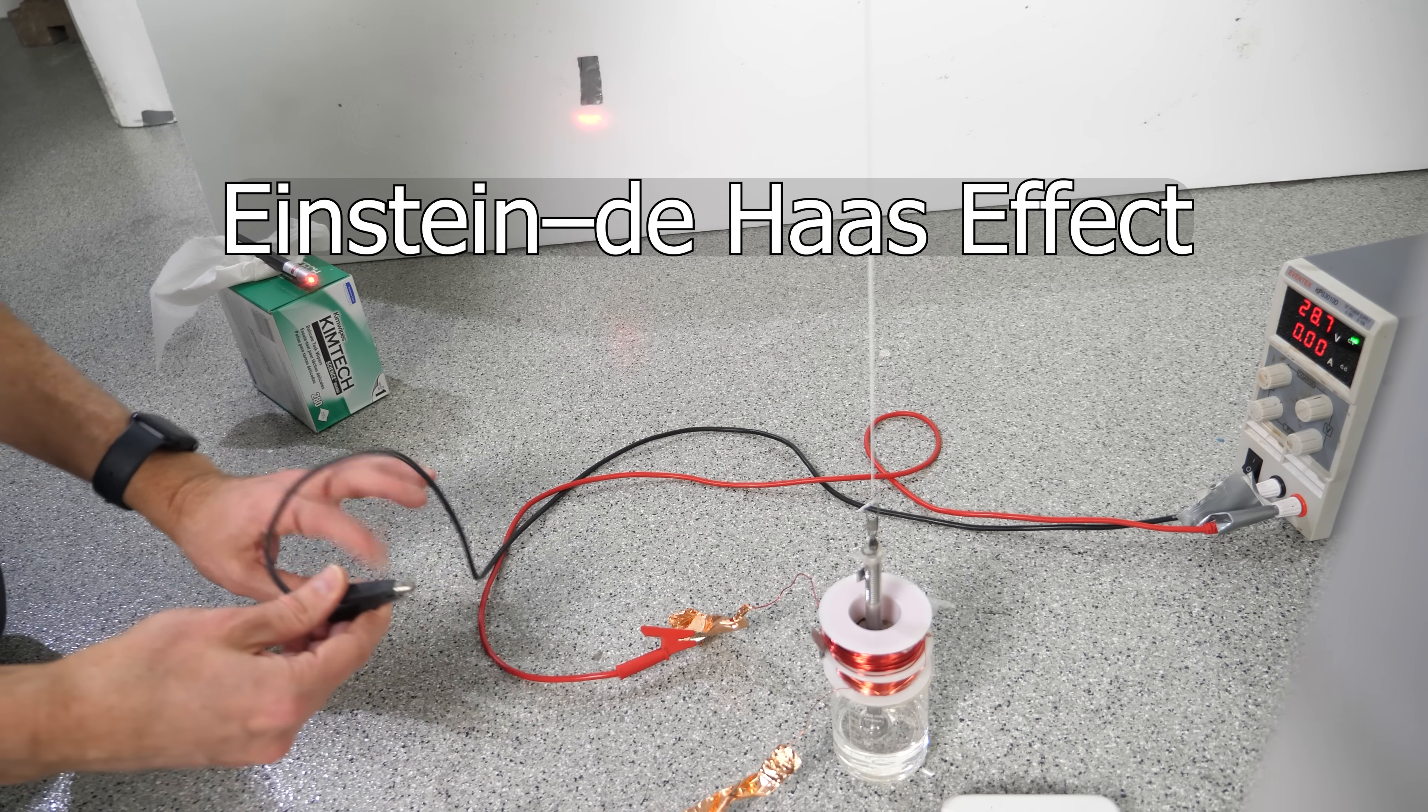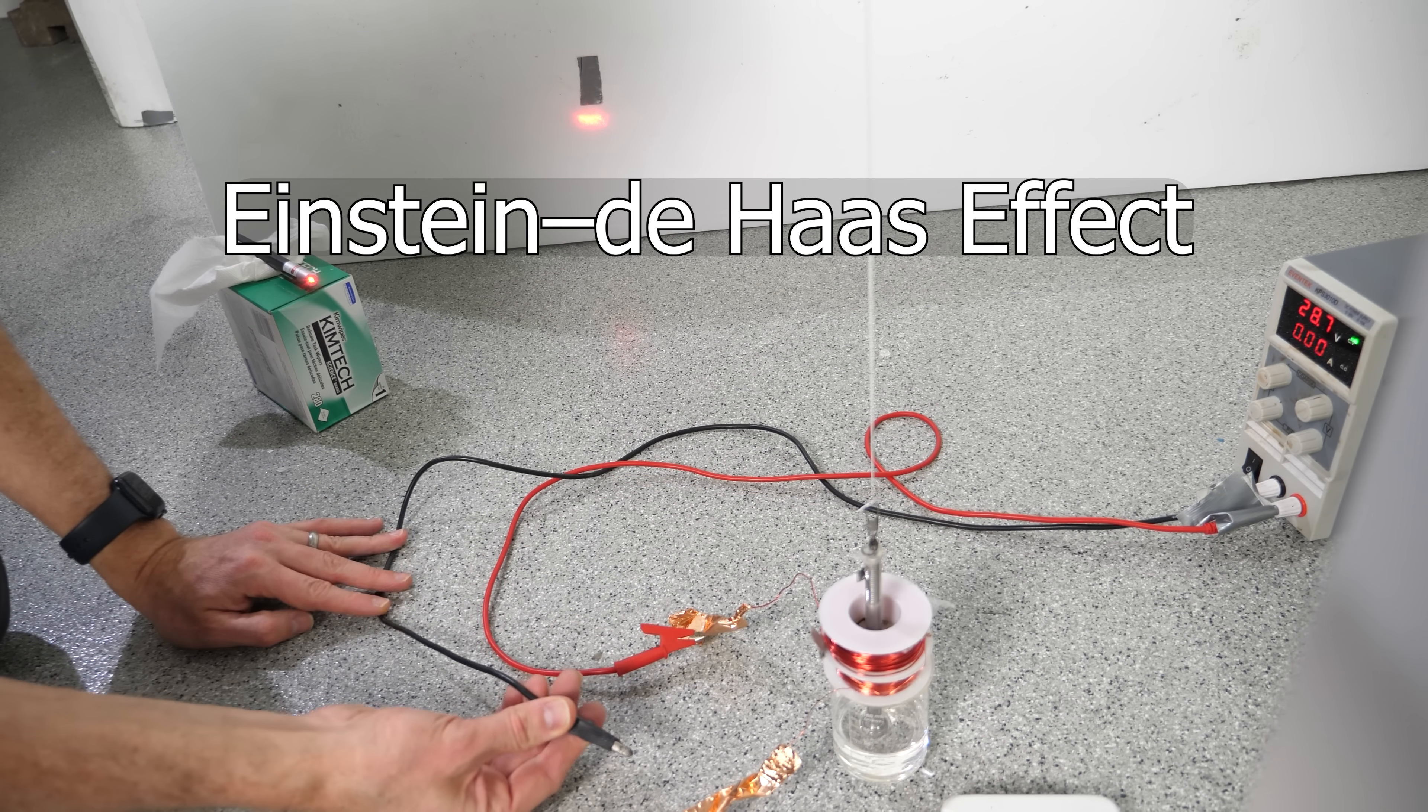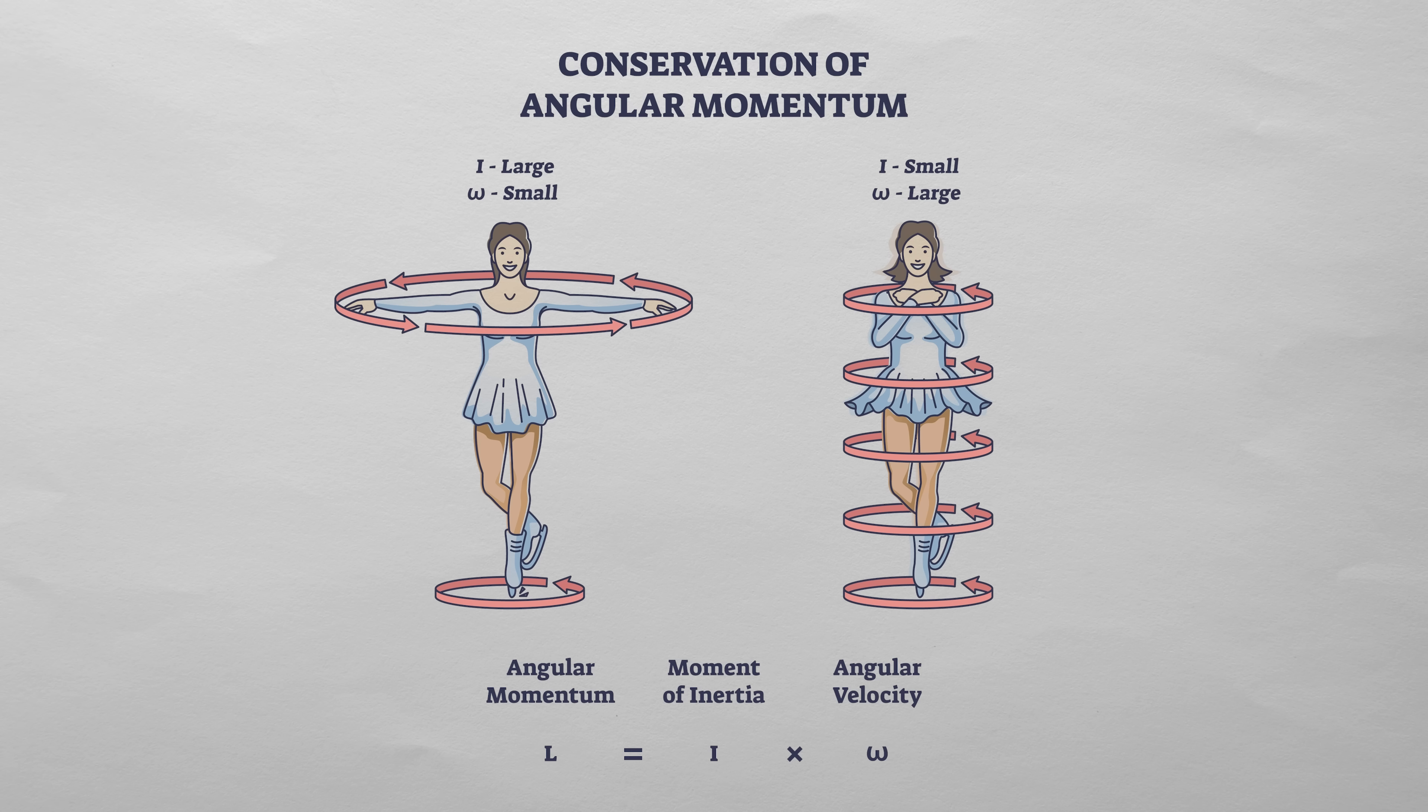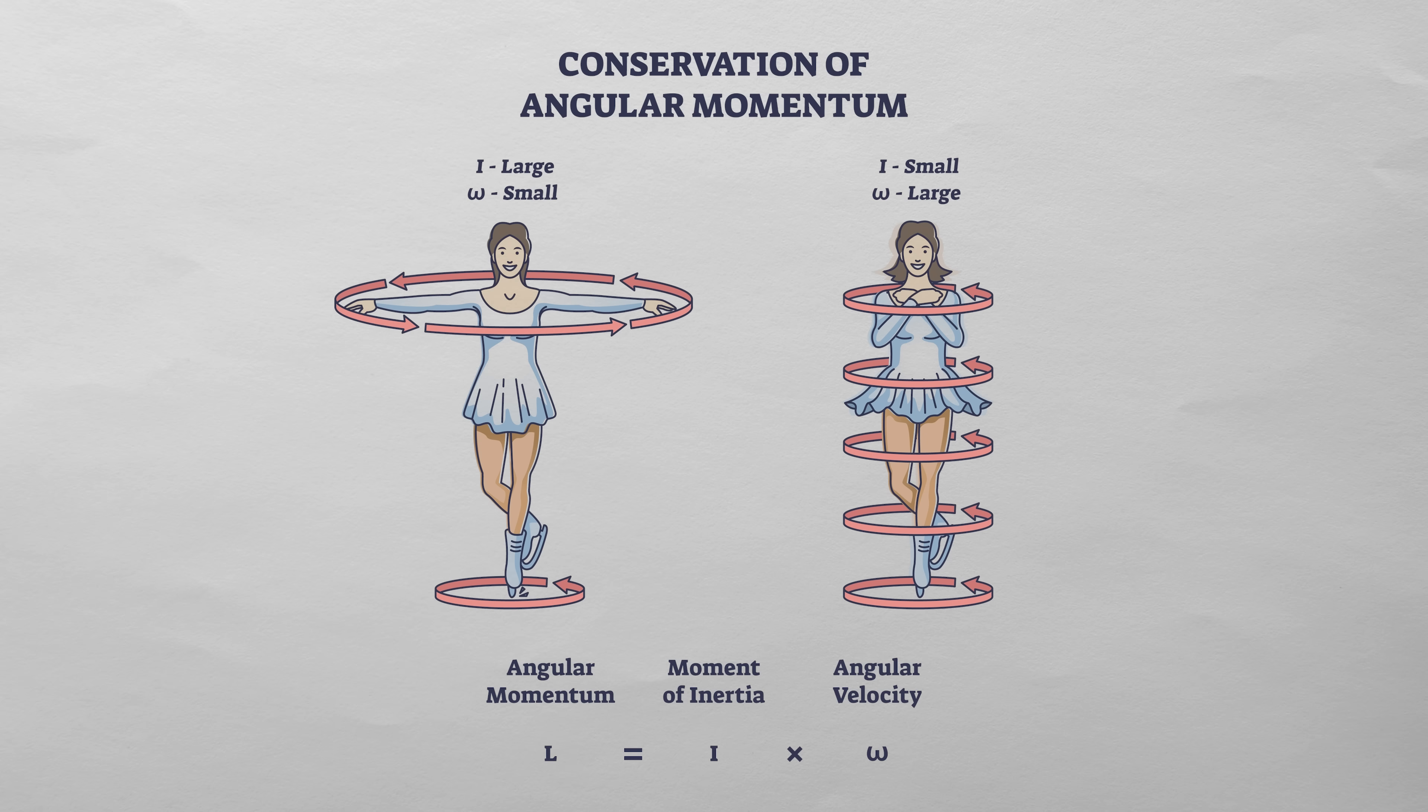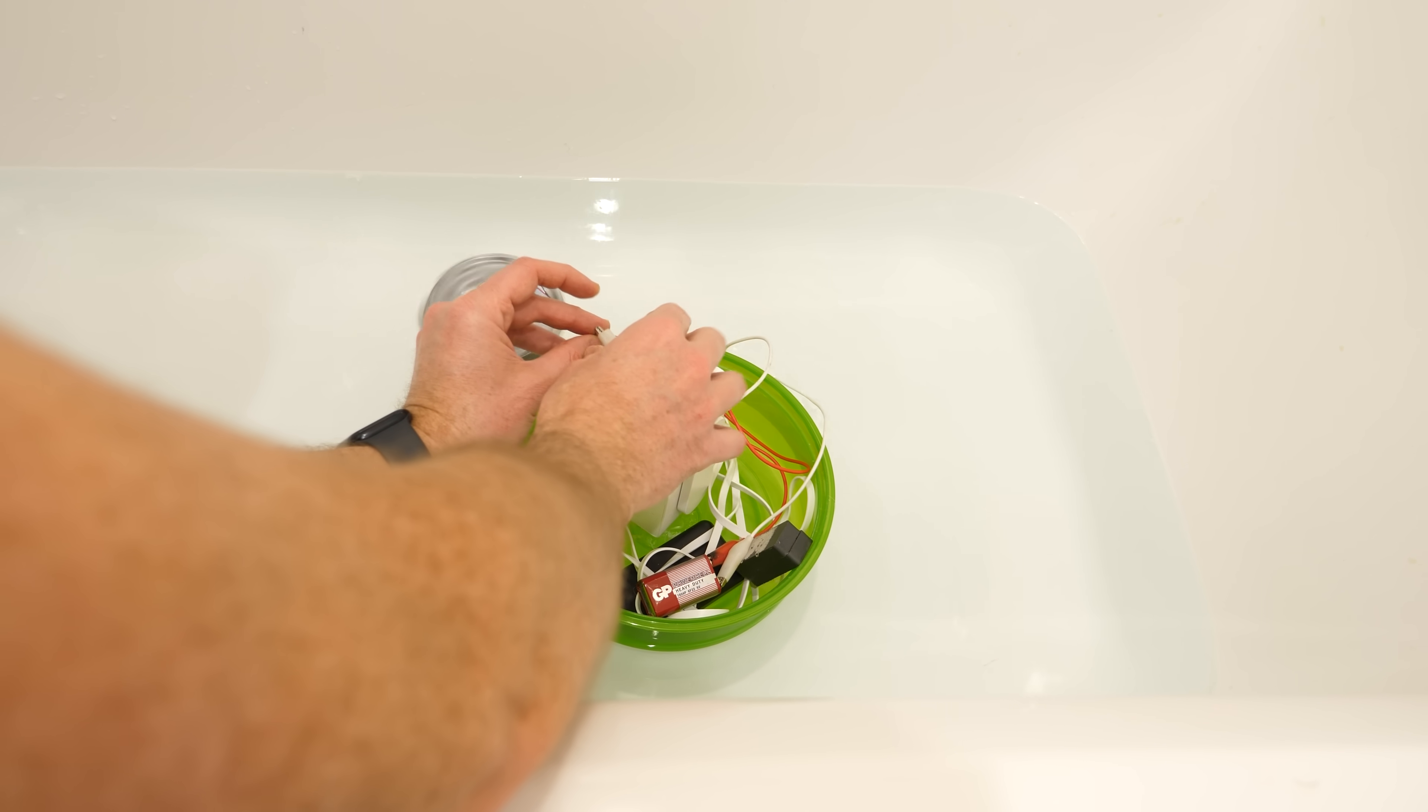If electrons truly have intrinsic angular momentum, then that momentum must be conserved, just like regular angular momentum. Conservation of angular momentum is one of the most fundamental laws of physics. It's never broken. To demonstrate this, let's start with a simple example.